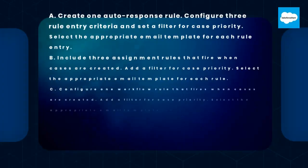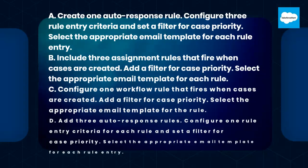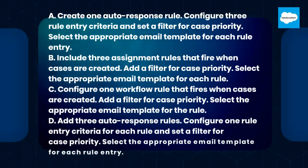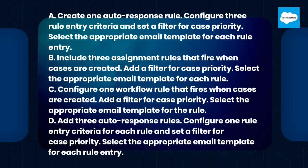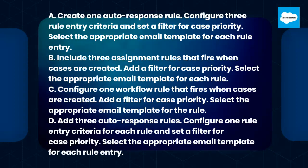A. Create one auto-response rule, configure three rule entry criteria, and set a filter for case priority, select the appropriate email template for each rule entry. B. Include three assignment rules that fire when cases are created, add a filter for case priority, select the appropriate email template for each rule. C. Configure one workflow rule that fires when cases are created, add a filter for case priority, select the appropriate email template for the rule. D. Add three auto-response rules, configure one rule entry criteria for each rule and set a filter for case priority, select the appropriate email template for each rule entry.